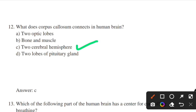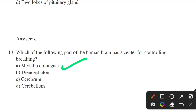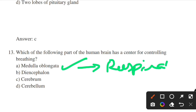Which part of the brain acts as the center for controlling breathing? Options: medulla oblongata, diencephalon, cerebrum, cerebellum. Answer: option A — medulla oblongata. Medulla oblongata is the cone-shaped neuronal mass responsible for autonomic functions. This part of the brain is the center for respiration and circulation.